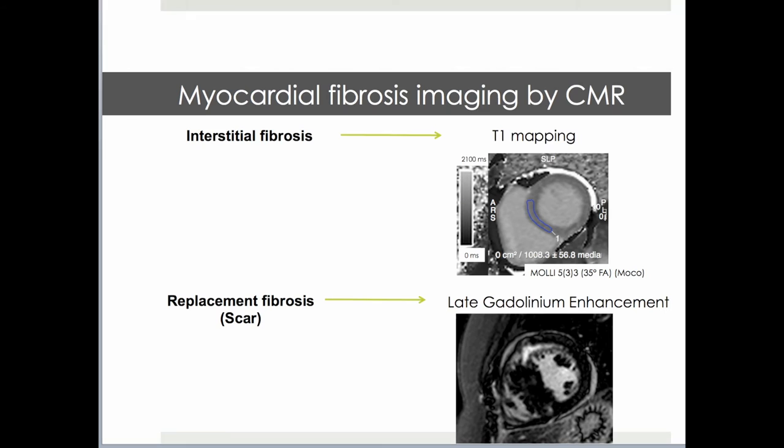Myocardial fibrosis imaging is one of the many strengths of cardiovascular magnetic resonance. Using T1 mapping and late gadolinium enhancement, it is able to detect interstitial and replacement fibrosis, respectively.